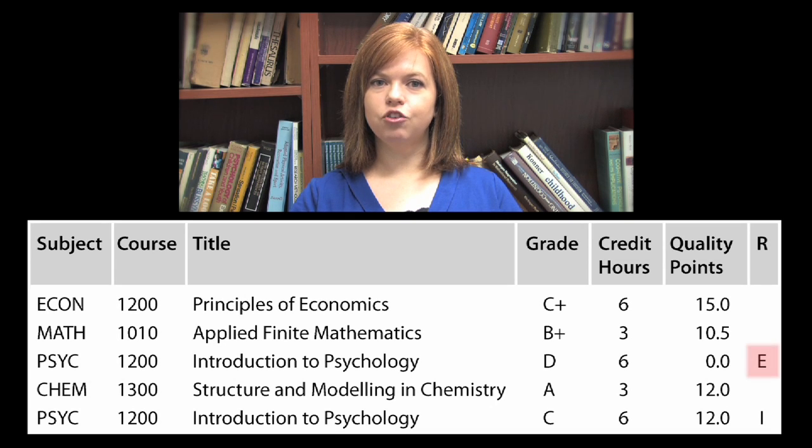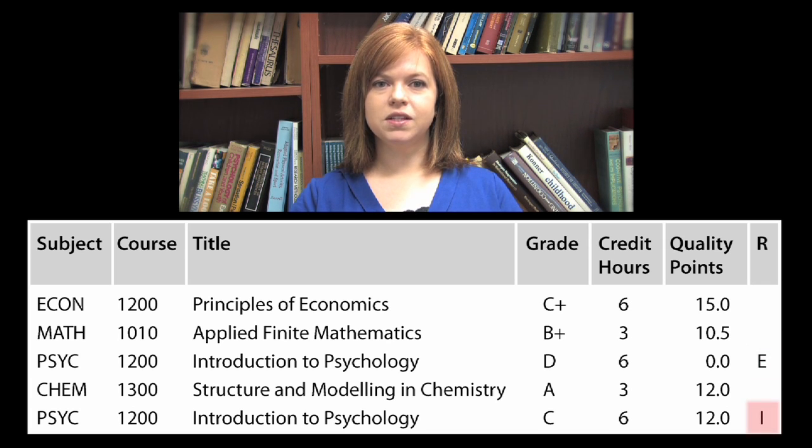Aurora Student calculates your Cumulative GPA with repeats automatically, but understanding how to calculate it is important so that you will be able to make informed decisions about whether repeating a course is the right thing for you and how the new attempt will impact your Cumulative GPA. If you repeat a course, only the last grade achieved will be counted towards your Cumulative GPA. This is indicated on Aurora Student with the letter E beside your previous attempt, signifying it is excluded from your calculation, and the letter I beside your most recent attempt, showing it is included.